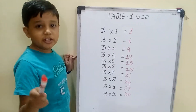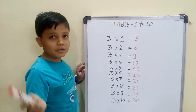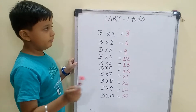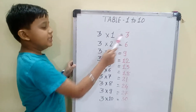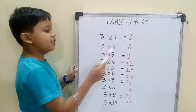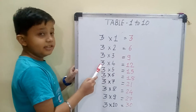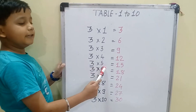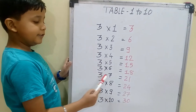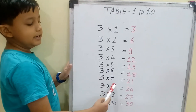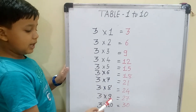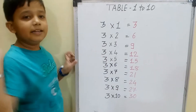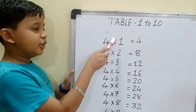Now children, you also repeat with me. The table of 3. 3 one is 3, 3 two is 6, 3 three is 9, 3 four is 12, 3 five is 15, 3 six is 18, 3 seven is 21, 3 eight is 24, 3 nine is 27, 3 ten is 30.